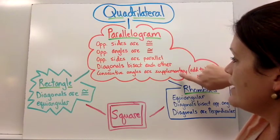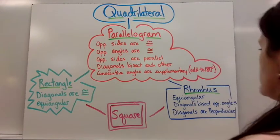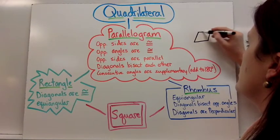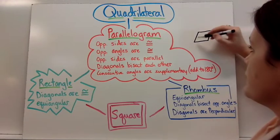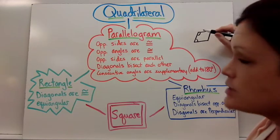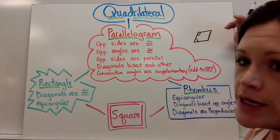And consecutive angles, that means two that are in a row. Let me draw you a little picture. So if you had a figure that looks like a parallelogram, consecutive means they're two right beside each other. They are supplementary. So those two would add up to 180.